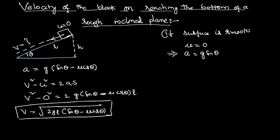Then the body will have an acceleration A equal to only g sin theta. By putting the coefficient of friction 0 in this equation, the equation of acceleration, just put mu equal to 0, then we will get A equal to g sin theta.